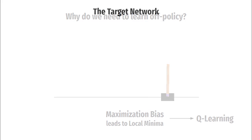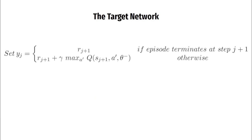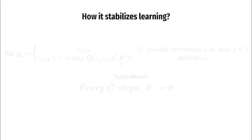Another element introduced in 2015 to stabilize learning was the target network. In total there are two networks: the main network, called the online network, and the target network. The architecture of the target network is completely the same as the online network. The online network is parameterized by theta and the target network by theta-minus. We use the target network to calculate the targets for updates. The target network is a slow copy of the online network, and its weights are replaced by those of the online network every C steps.